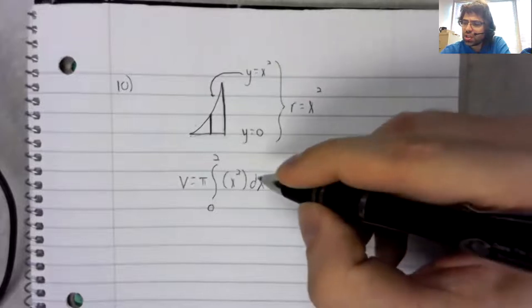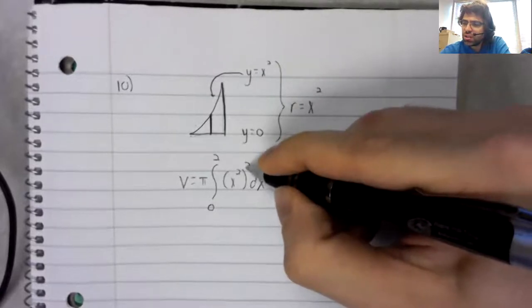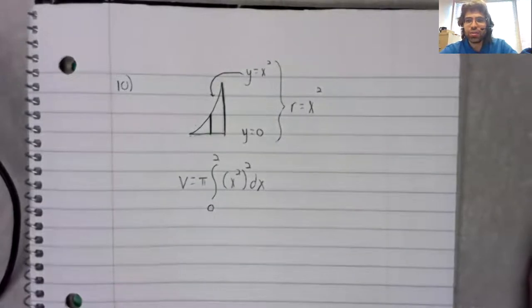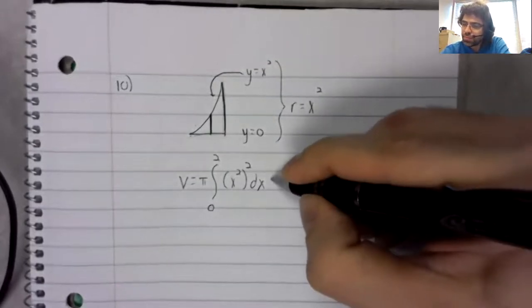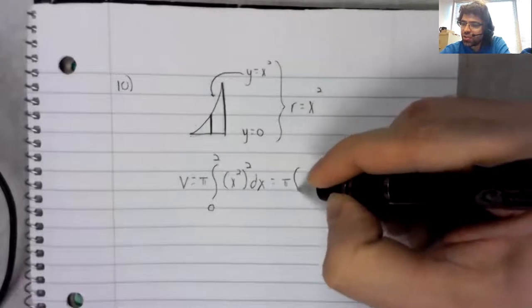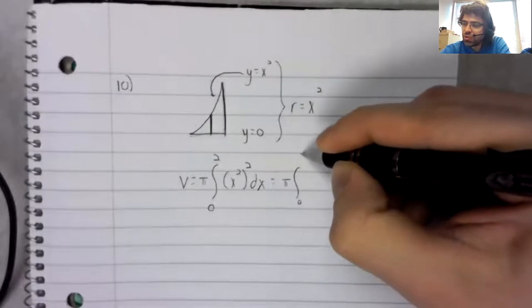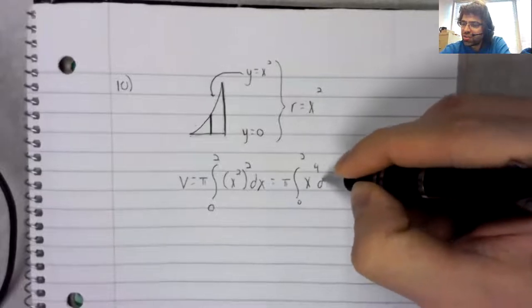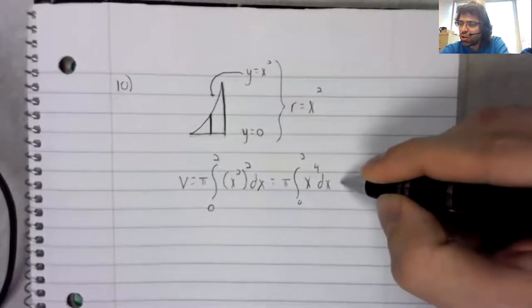And sorry, this is the radius squared. The radius squared. Pi times the integral from 0 to 2, x to the 4th dx.